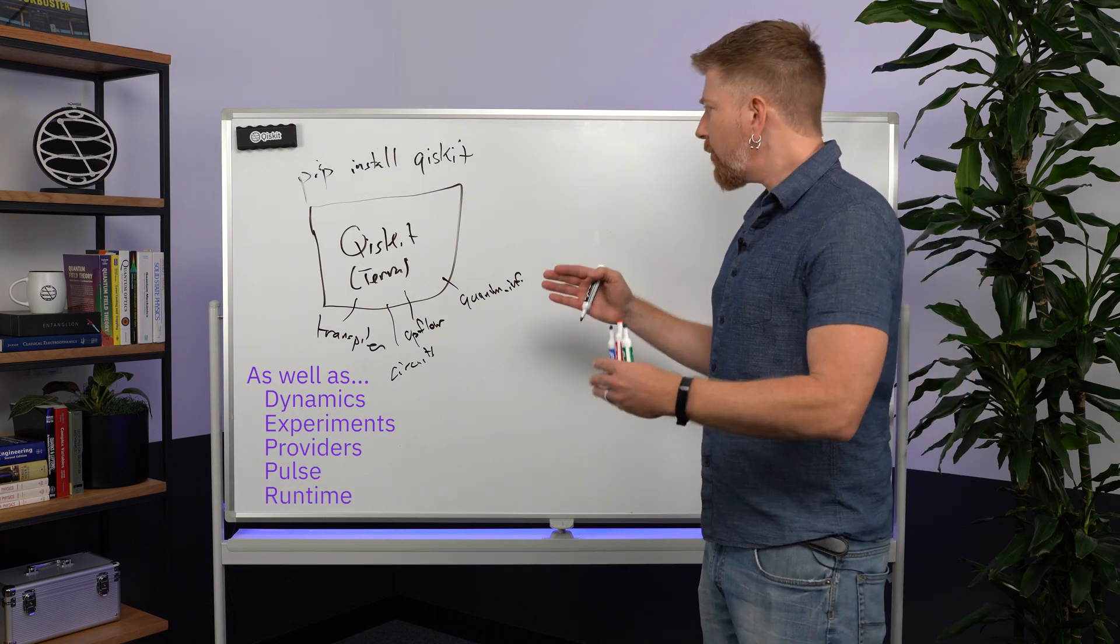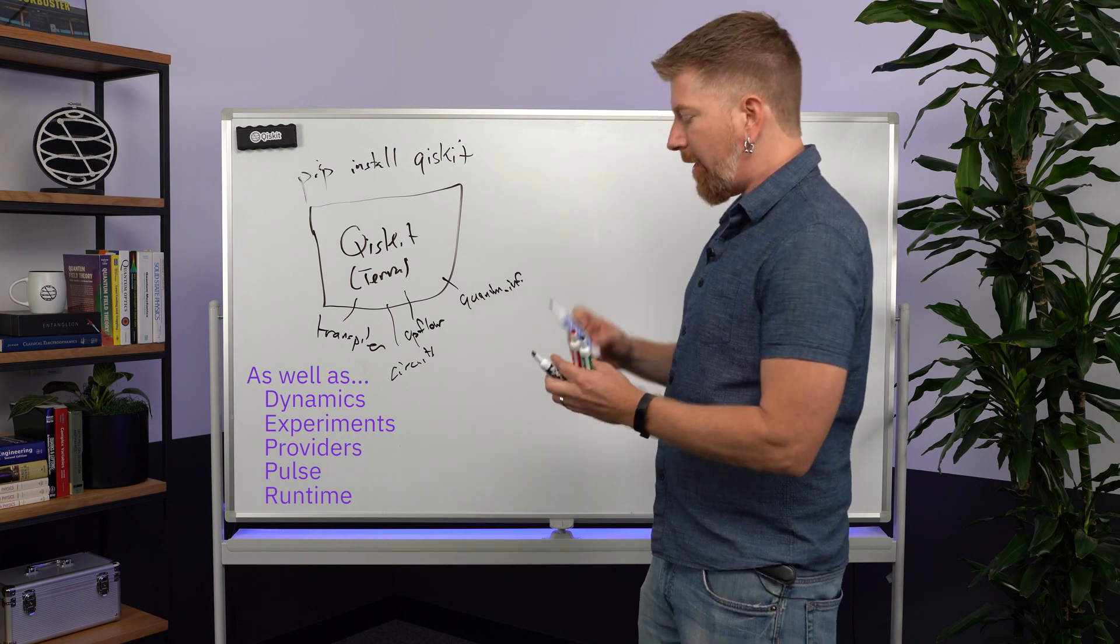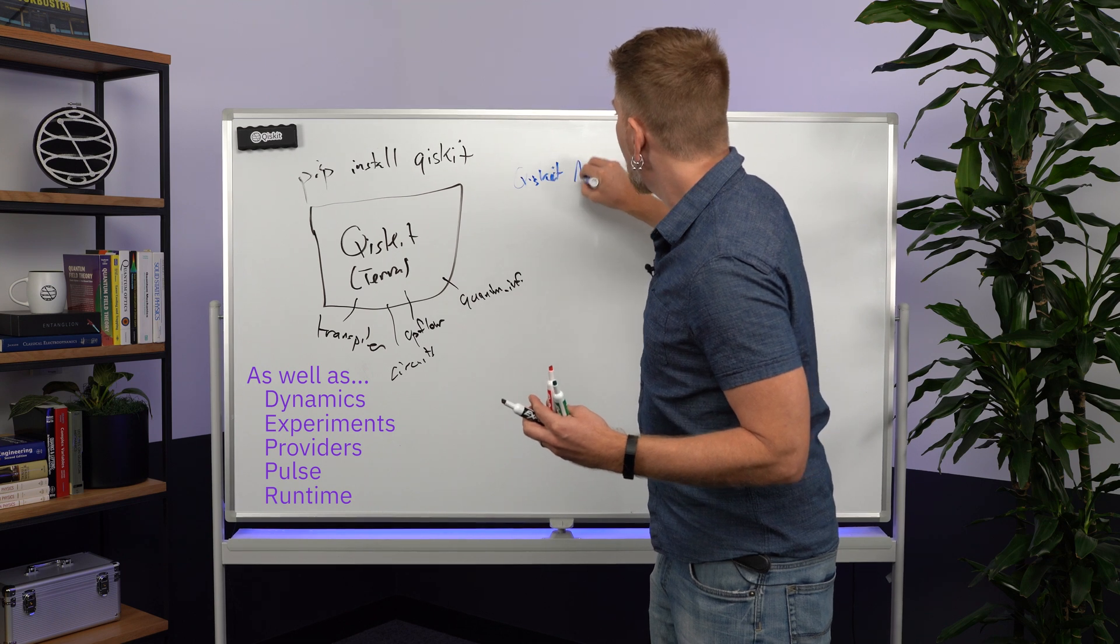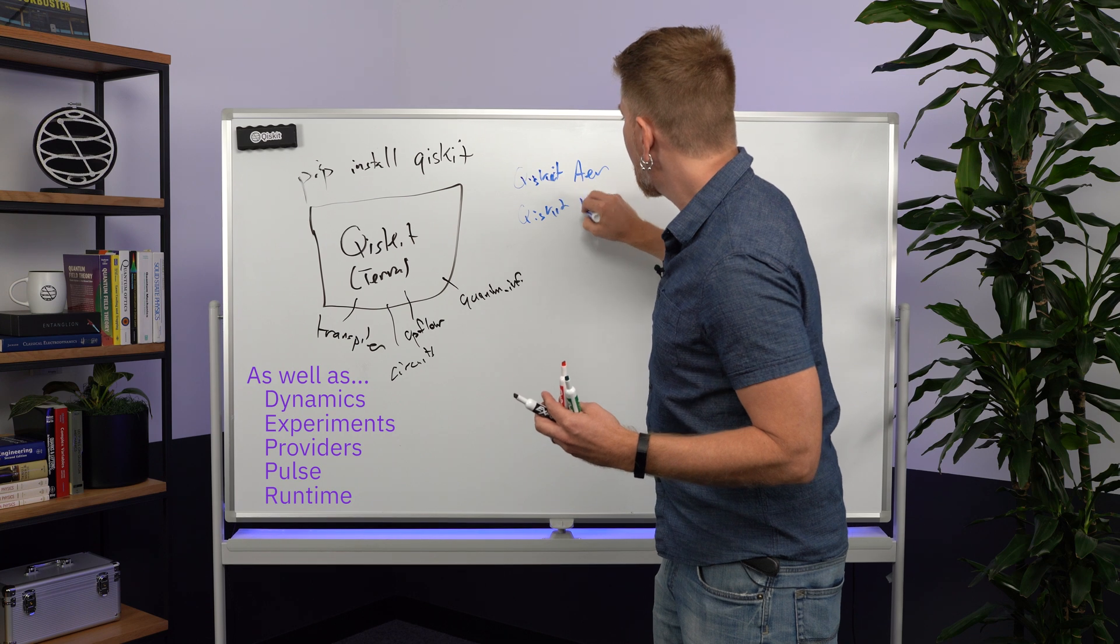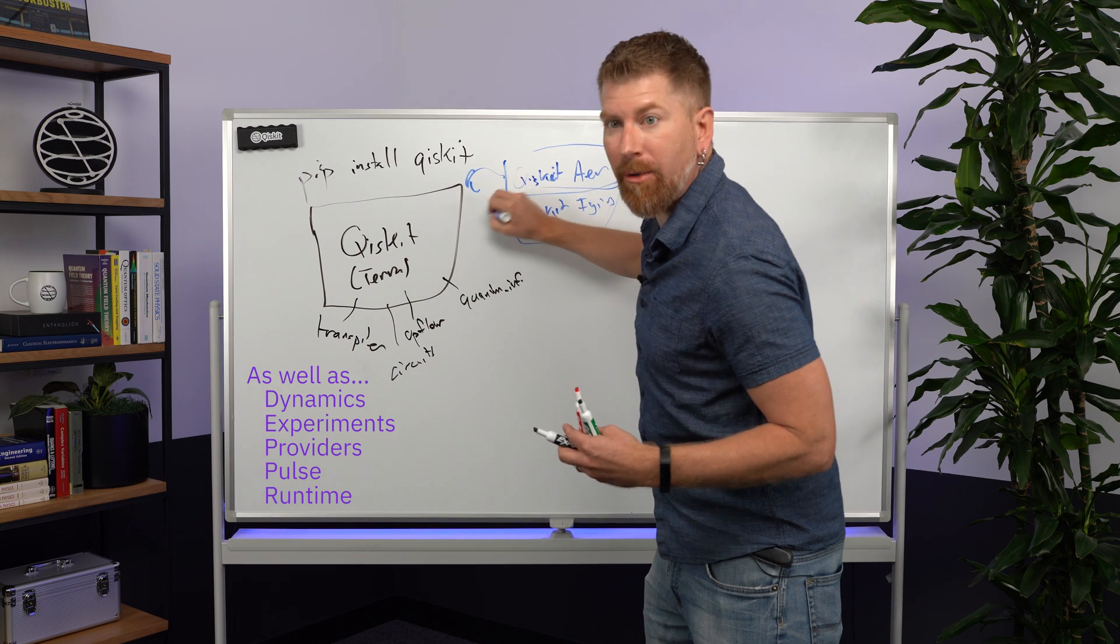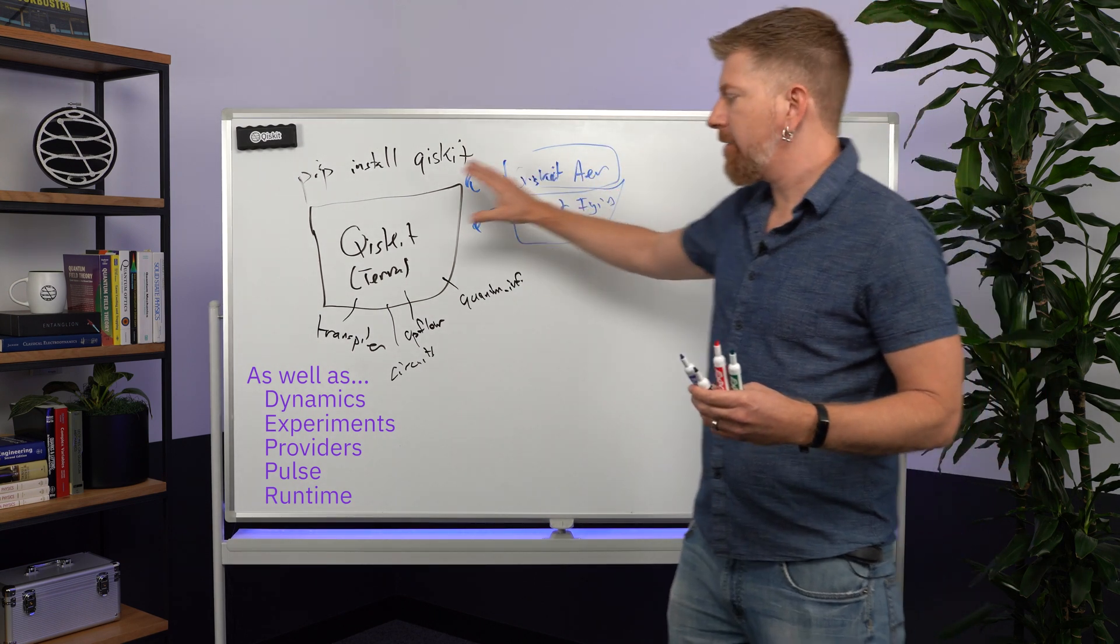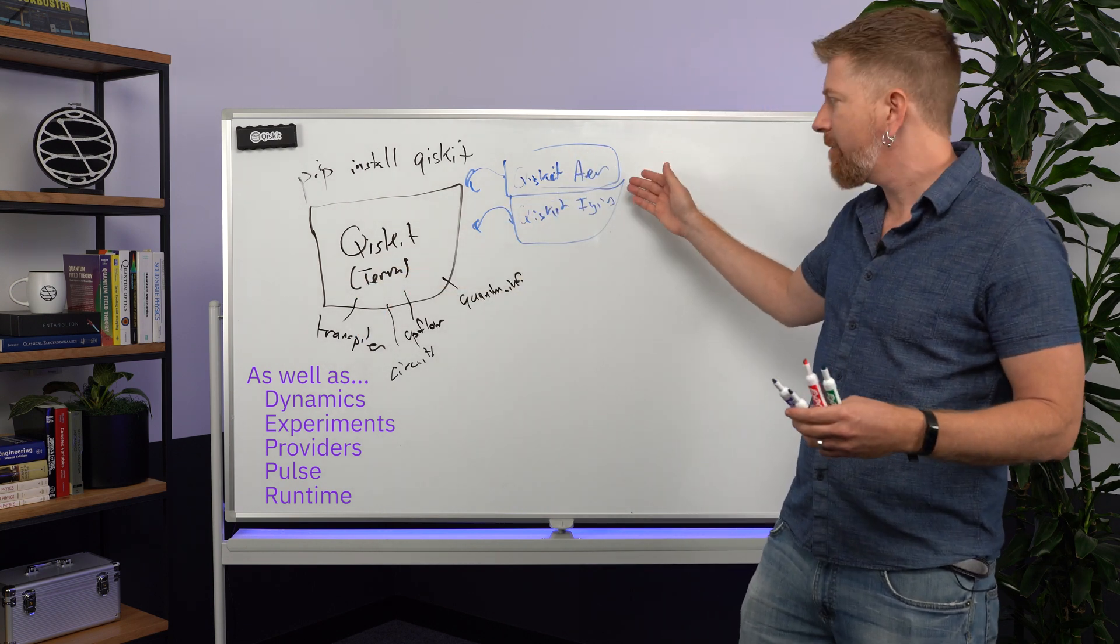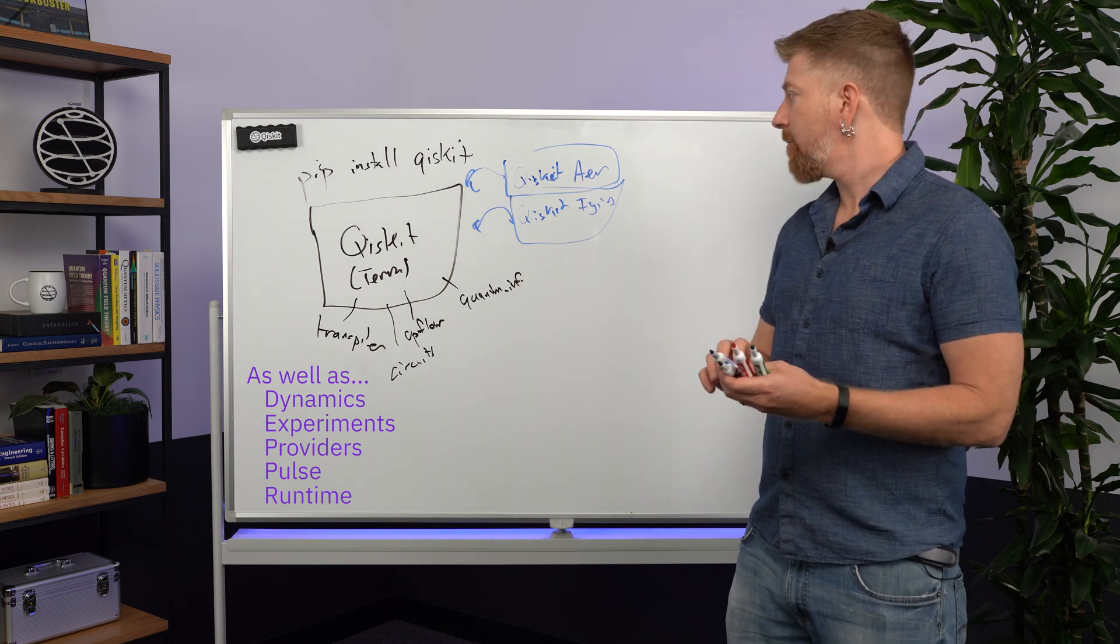On top of that, you can install other elements of Qiskit. These other element-level ones are things called Qiskit Air and Qiskit Ignis, and these are standalone things on their own right that can be added on top of the base Qiskit. You don't need these to run your quantum circuits, but they can provide information or usefulness. For example, Air provides noise simulators. Ignis provides ways to do benchmarking and calibration of your circuits.